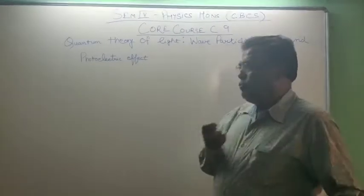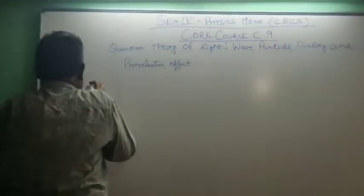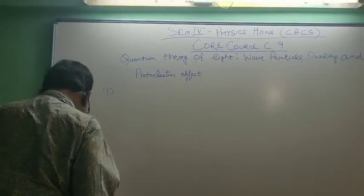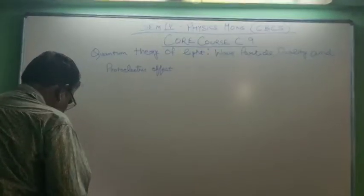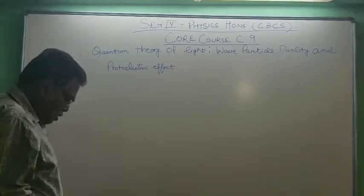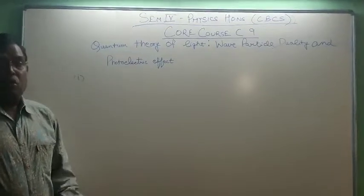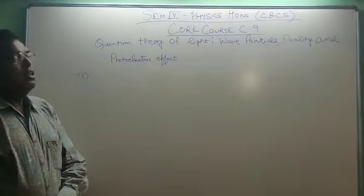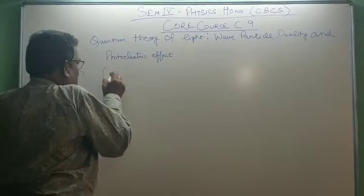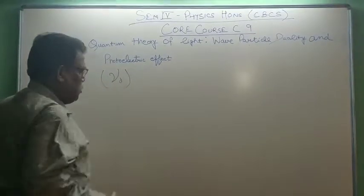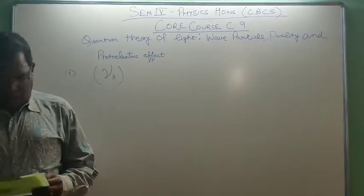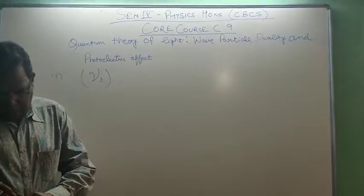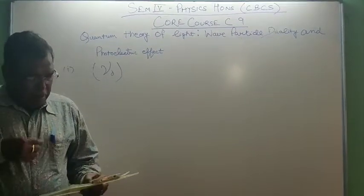Number 1: A minimum frequency of electromagnetic wave is required for the ejection of electron from the metal surface. It is called threshold frequency, denoted by nu naught, and is characteristic of the emitting surface.